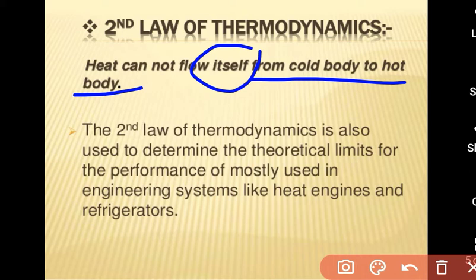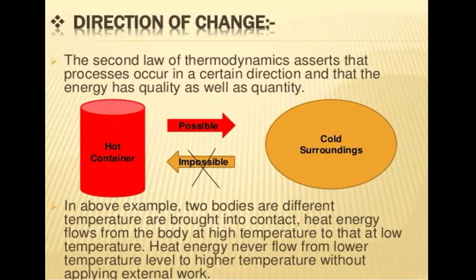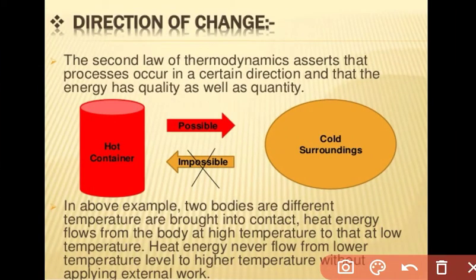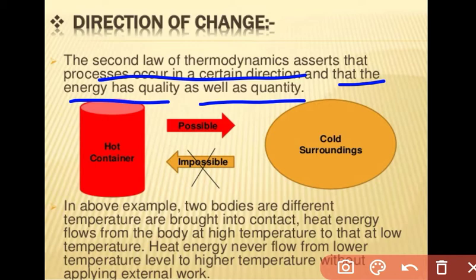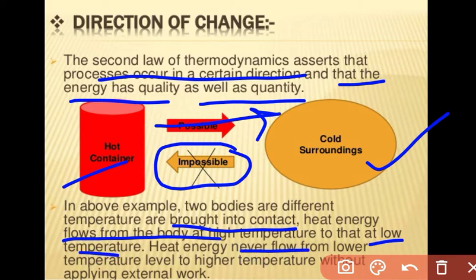The second law of thermodynamics is used to determine the theoretical limits for performance of mostly used engineering systems like heat engines and refrigerators. It gives the direction of change — processes occur in a certain direction and energy has quality as well as quantity. For example, this direction is possible: hot to cold; but this is impossible: cold to hot. In the above example, two bodies at different temperatures brought into contact — heat flows from the body at higher temperature to that at lower temperature. Heat energy never flows from a lower temperature level to a higher temperature level without applying external work.